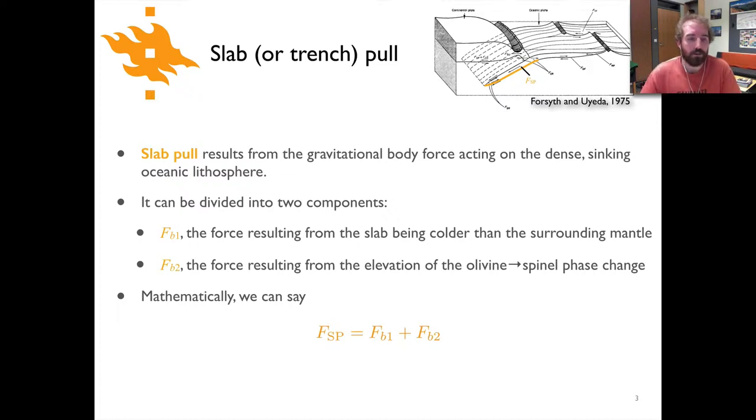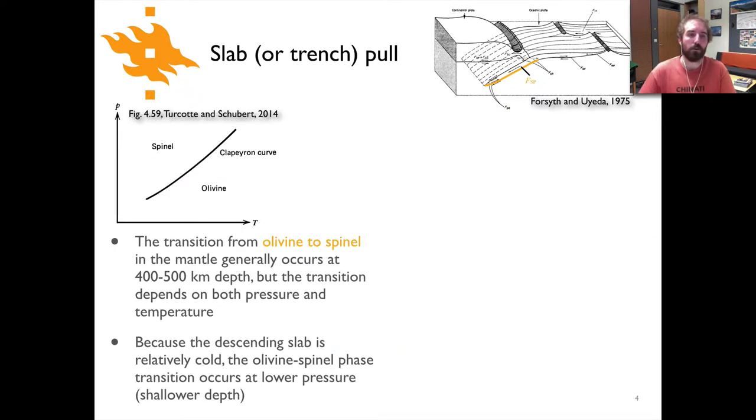Just as a reminder, in the previous lecture we noted that there were two components to the slab pull force: the combined component due to the colder slab relative to the warmer mantle, and then the olivine-spinel phase transition component. Those two combined give us the total slab pull force.